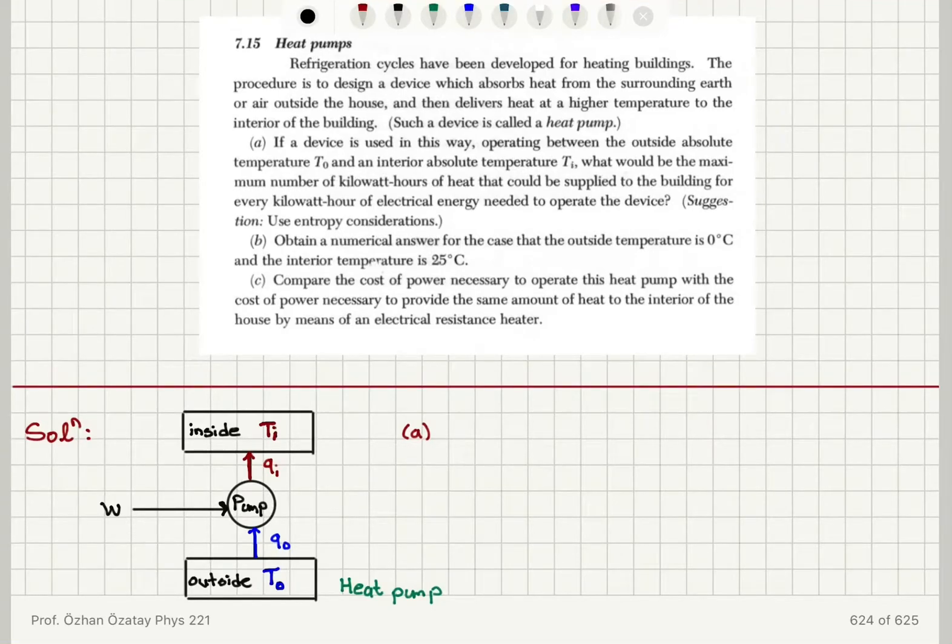Heat Pumps: Refrigeration cycles have been developed for heating buildings. The procedure is to design a device which absorbs heat from the surrounding earth and delivers heat at a higher temperature to the interior of the building. If a device operates between outside absolute temperature T0 and interior absolute temperature Ti, what would be the maximum number of kilowatt hours of heat that could be supplied to the building for every kilowatt hour of electrical energy needed to operate the device?